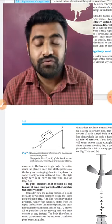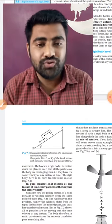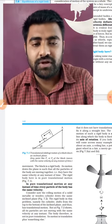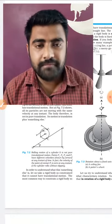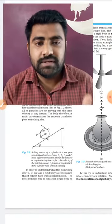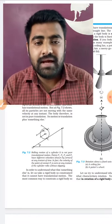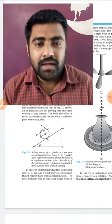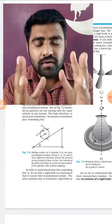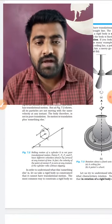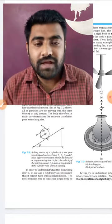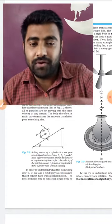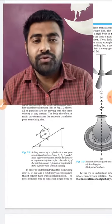That is called pure translation motion — there is no rotation in this example. But if instead we take a circular ring or a wooden wheel, it will not slide. It will roll down. When it rolls, the velocities at different points on its surface will be different.